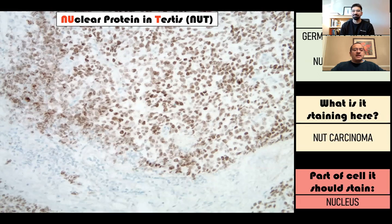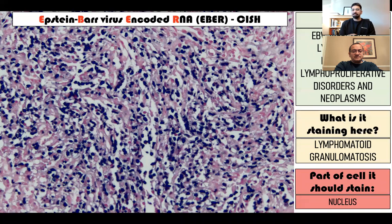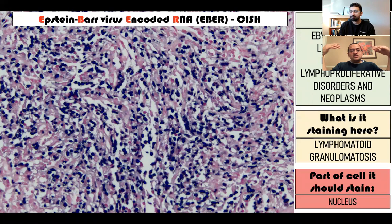Let's go to Epstein-Barr virus encoded RNA - EBER. EBER is a stain for Epstein-Barr virus, and it's not immunohistochemistry. It's actually CISH - C-I-S-H. In immunohistochemistry you're looking for antigens, which are proteins. In in-situ hybridization, your tag attaches not to the protein but to the RNA - it goes straight to the genetic material. There are two ways to see that tag: one uses a chromogen, just like IHC - that's called chromogenic in-situ hybridization, CISH. In this picture the chromogen is blue, so everything that turned blue is positive for Epstein-Barr virus.